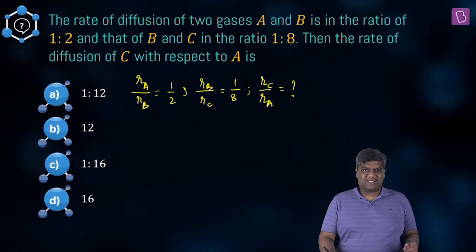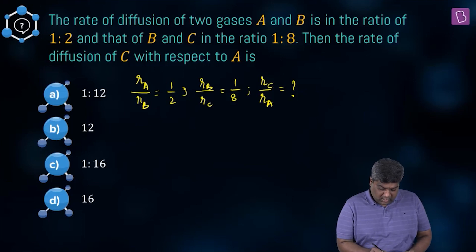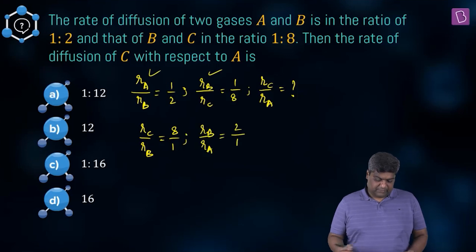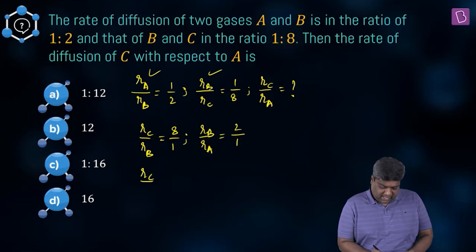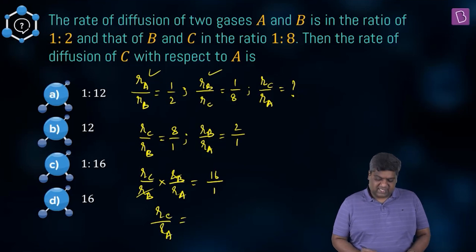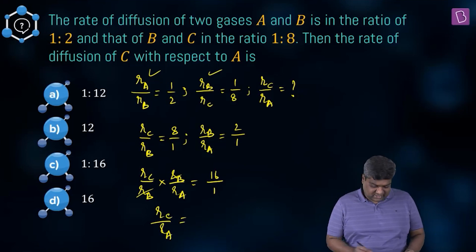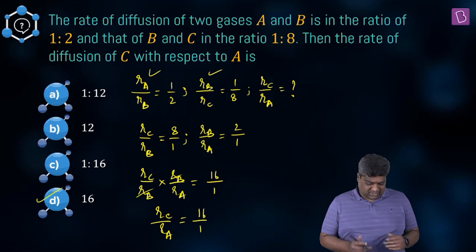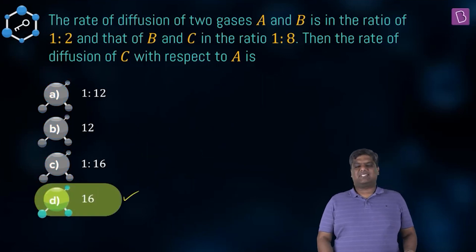From the given ratios, rC/rB = 8/1 and rB/rA = 2/1. Multiplying: rC/rB × rB/rA = 8 × 2 = 16. The rB cancels, leaving rC/rA = 16:1. That is option D, the correct answer for this question.